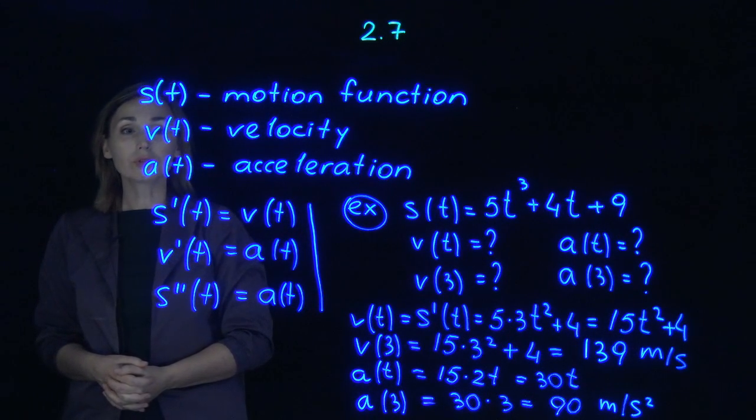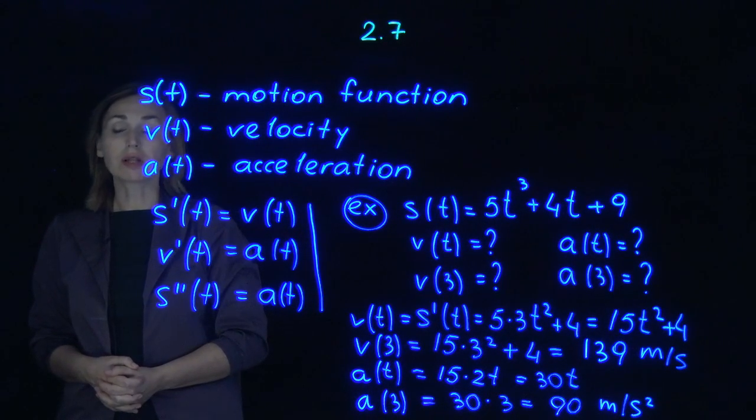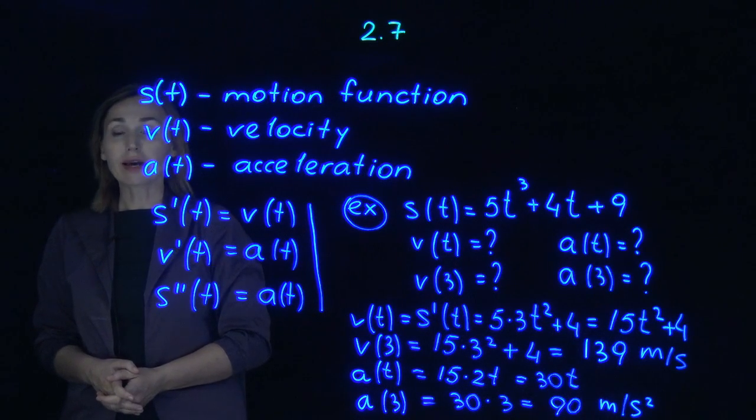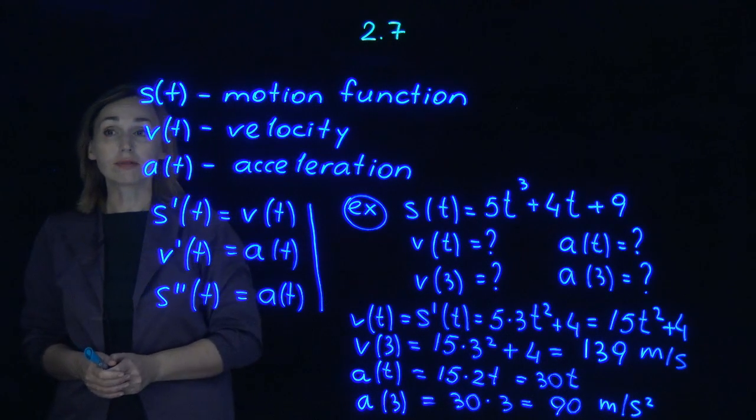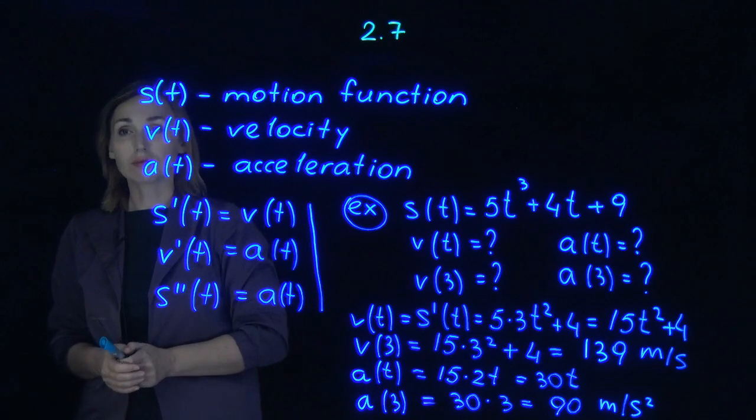Now we are talking about the motion function, velocity, acceleration, and the connection between these three. Motion function is S at t, you have it here. V at t is velocity, A at t is acceleration.